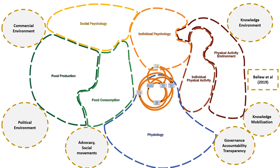Later, others have added to this system's map, including commercial environment, political environment, advocacy and social movements, as well as the knowledge environment, knowledge mobilisation processes, and governance, accountability and transparency.